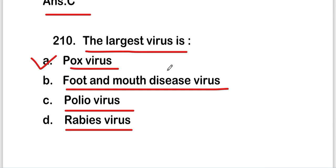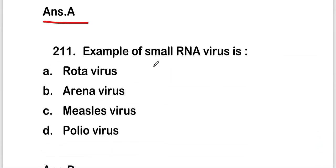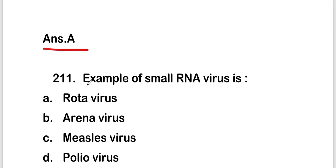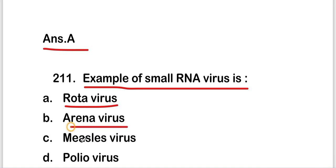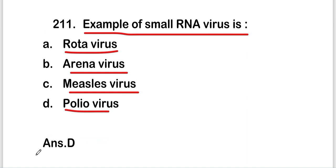The next question is: an example of a small RNA virus is — rotavirus, adenovirus, measles virus, or polio virus. The right answer is option D, that is polio virus. Polio virus is a small RNA virus.